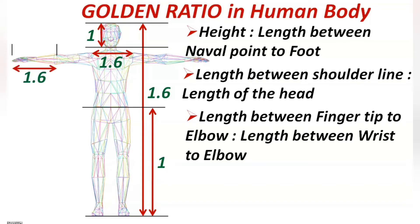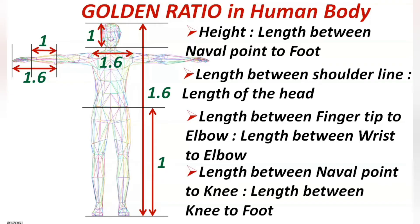Next, length between fingertip to elbow. If it is 1.6 units, then the length between wrist to elbow will be one unit. This is also a golden ratio, which is 1.6 is to 1.